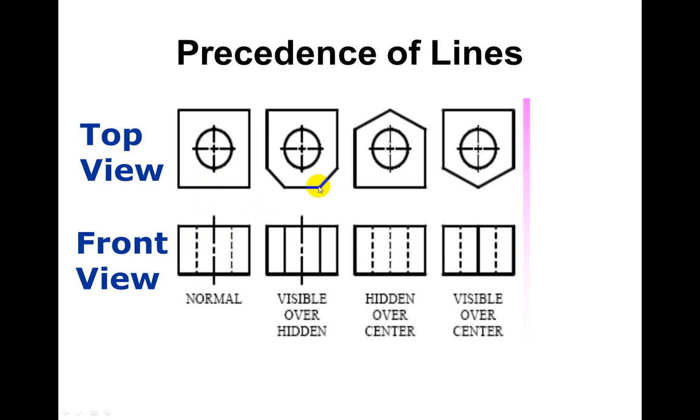Now here we've got object lines that we would draw first. The hidden lines are not going to be there because the object lines are already there. Next we have hidden lines again. But here we're going to have also a hidden line. So notice we draw our hidden lines. Then we would draw a center line.